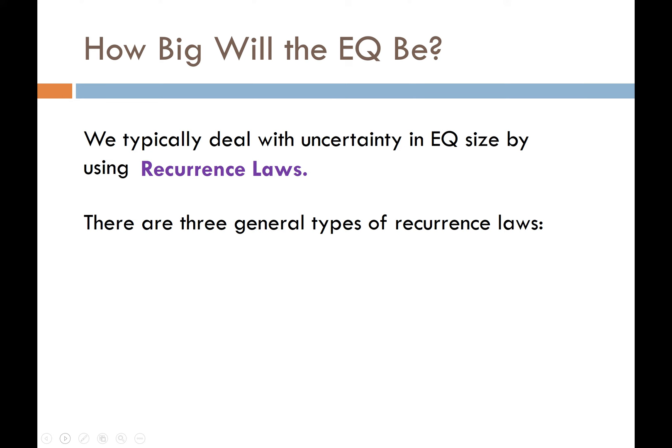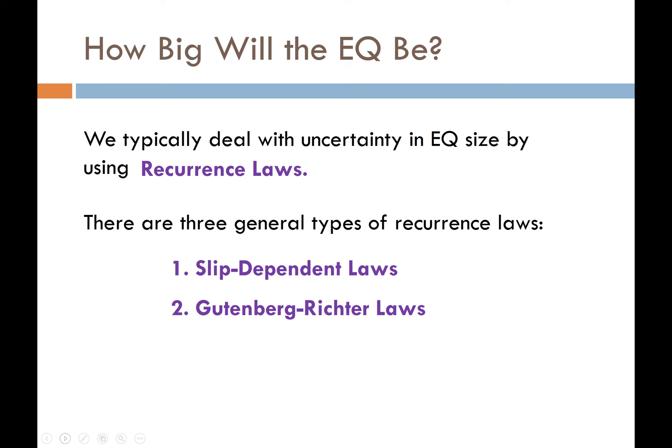There are three general types of recurrence laws that we commonly use in PSHA. The first is slip-dependent laws — recurrence laws governed by regularity in the slip of the fault. The second are what we call Gutenberg-Richter laws. And the third are what we call characteristic earthquake laws.